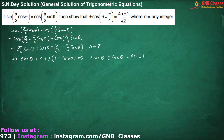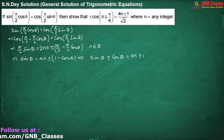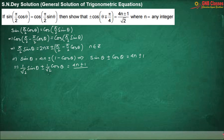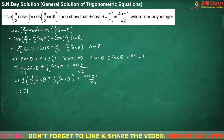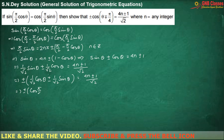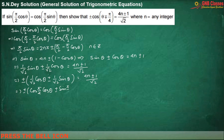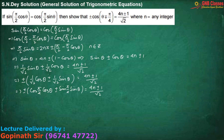Now I'm dividing both sides by √2. If I take ± common, then 1/√2 is replaced by cos 45°, so cos(π/4)·cos θ, and 1/√2 here is sin(π/4)·sin θ. This can be written as cos(a)cos(b) ± sin(a)sin(b).